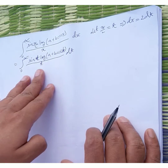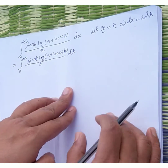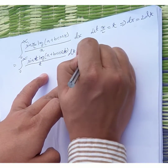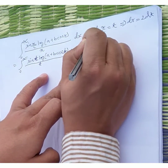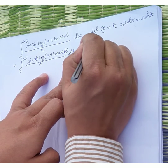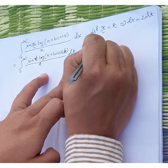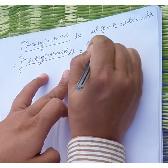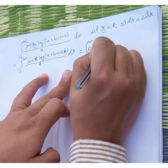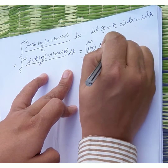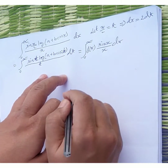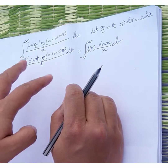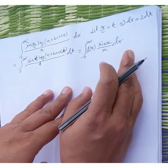So I get this value. After that, this formula can be written in the form: the integral of f(x) times sin(x) divided by x dx.